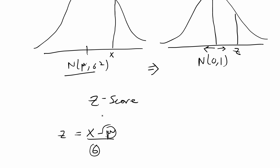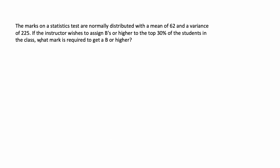Let's go over an example of how you would do this type of conversion using a practice problem. I'm going to use the statistics table I showed at the beginning of this video to solve it. The problem says: the marks on a statistics test are normally distributed with a mean of 62 and a variance of 225.